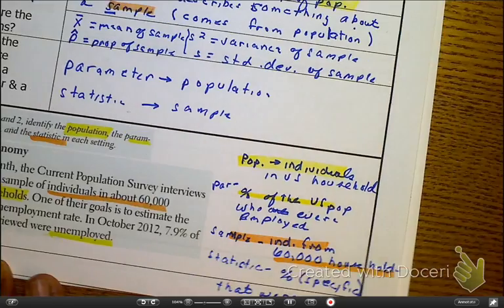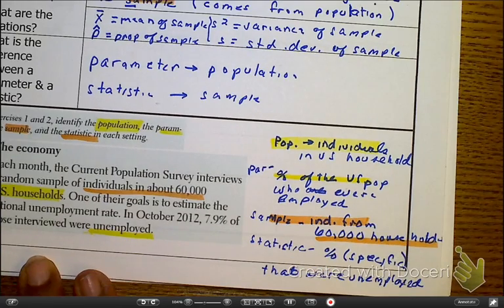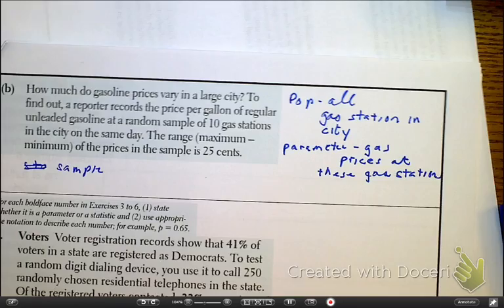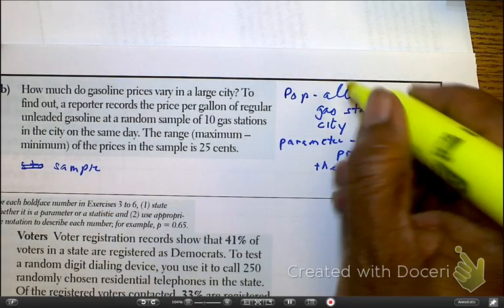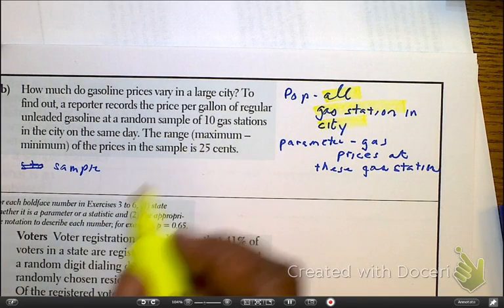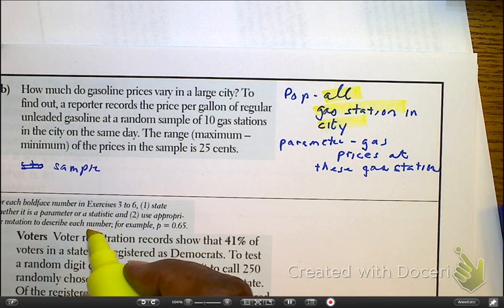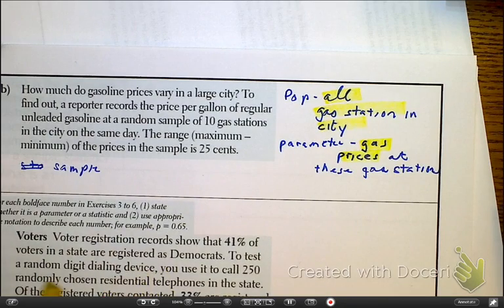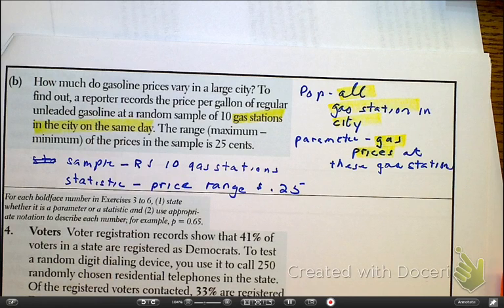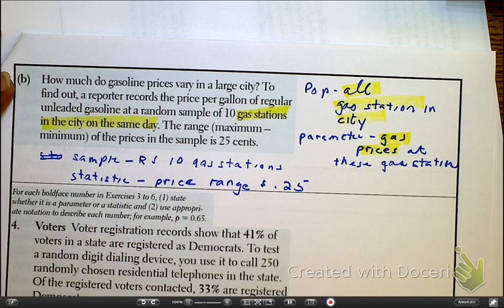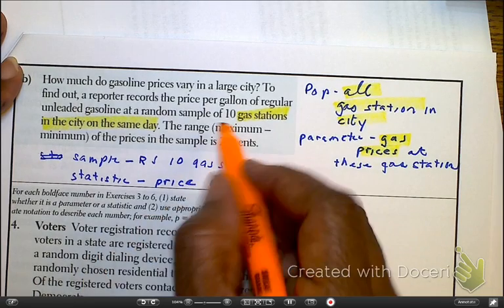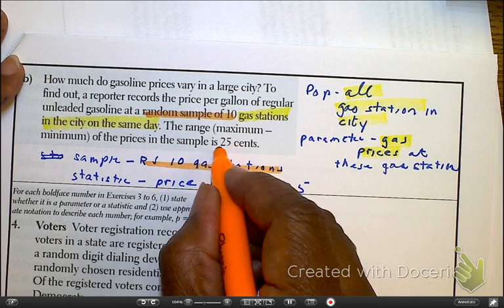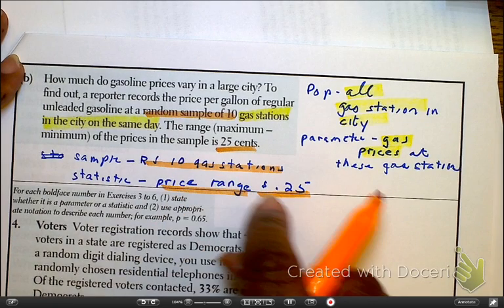Okay, now let's turn to the next page. So, as you look at the population, here we have all of the gas stations in the city. Because remember, that's the big picture. And the parameter are the gas prices themselves, a specific gas price. So, as we look at the sample, here we can see the sample specifically is the random sample of 10. And the statistics is the specific information about the random sample that we're looking at, which is the price range specifically of 25 percent.